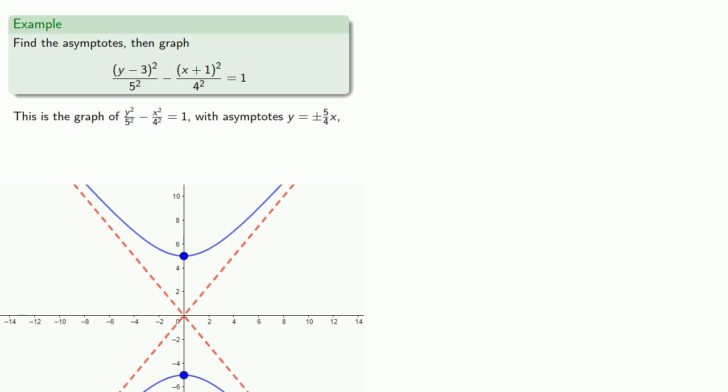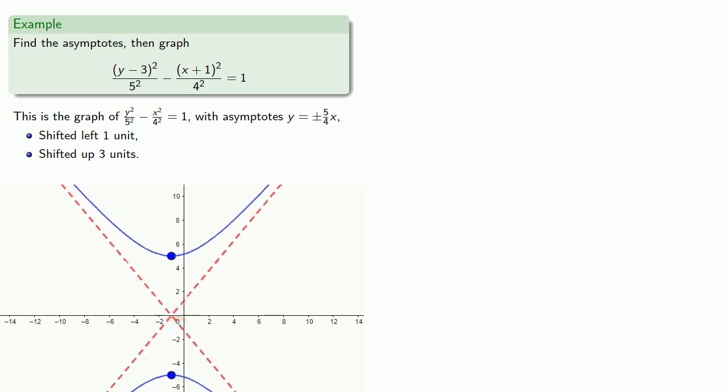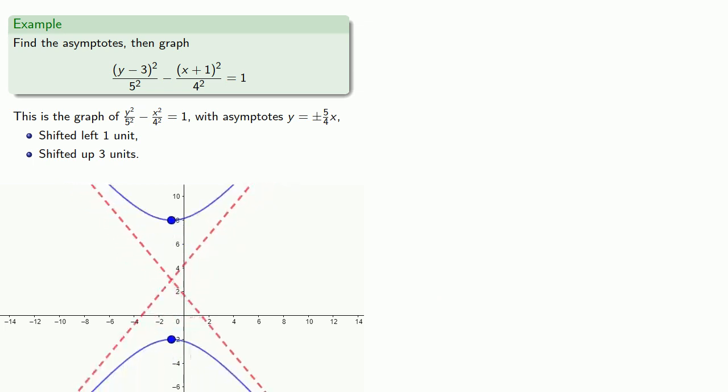And so the graph we want will be this graph shifted one unit to the left, then shifted up three units. And this affects the asymptotes in exactly the same way, shifting them one left and up three units. And so the equation for the asymptotes will be...